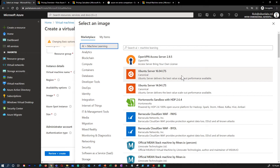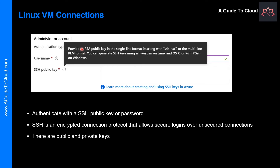SSH is an encrypted connection protocol that allows secure sign-ins over unsecured connections. SSH is the default connection protocol for Linux VMs hosted in Azure. Although SSH provides an encrypted connection, using a password with SSH still leaves VMs vulnerable to brute-force attacks or password guessing. A more secure and preferred method is connecting using a public-private key pair, also known as SSH keys. The public key is placed on your Linux VM using public key cryptography.